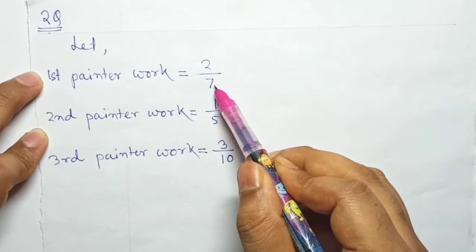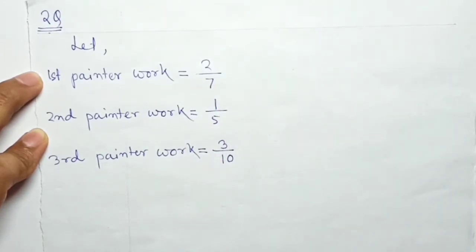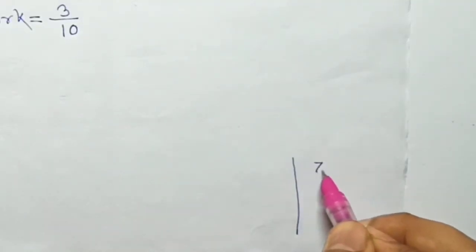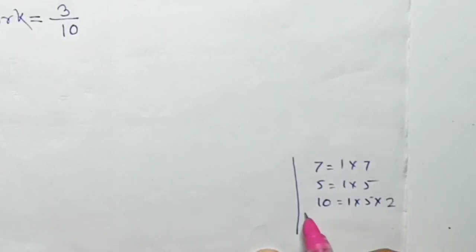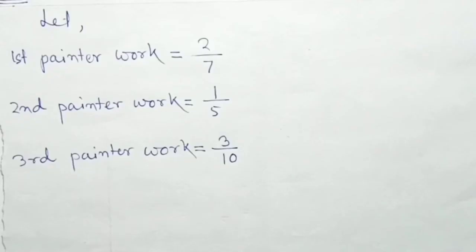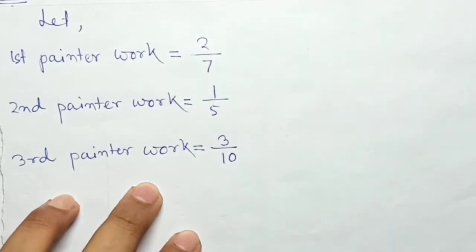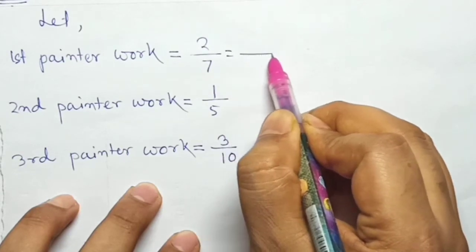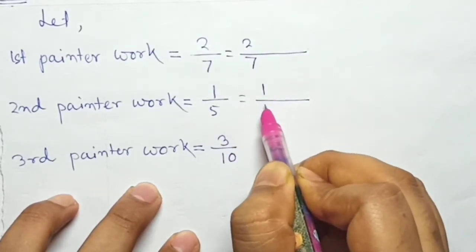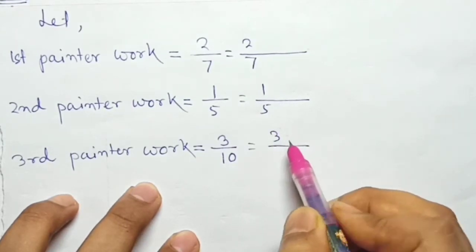To find which is greatest, we need to find the LCM. 7, 5, and 10 - factors are 1×7, 1×5, 1×2. The LCM is 5×7×2, which equals 70. Now we'll convert each fraction to have denominator 70.